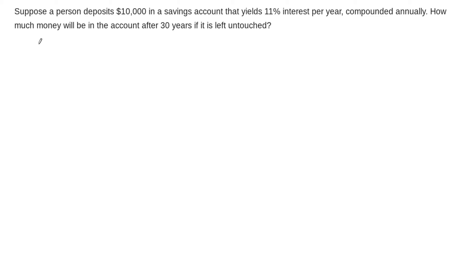In this example, we're asked to figure out how much money is in a bank account. A person deposits $10,000 in a savings account that yields 11% interest per year, compounded annually. So annually, this is going to tell us the amount of time that we have to consider here, or the time frame. And we want to know how much is in the account after 30 years if it's left to just sit there, nothing added to it, nothing taken away from it.